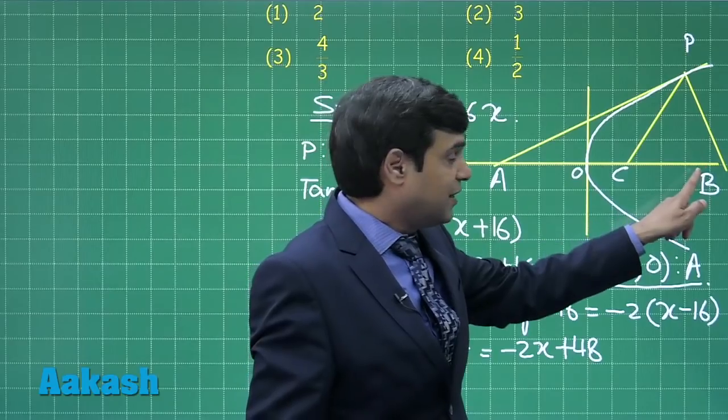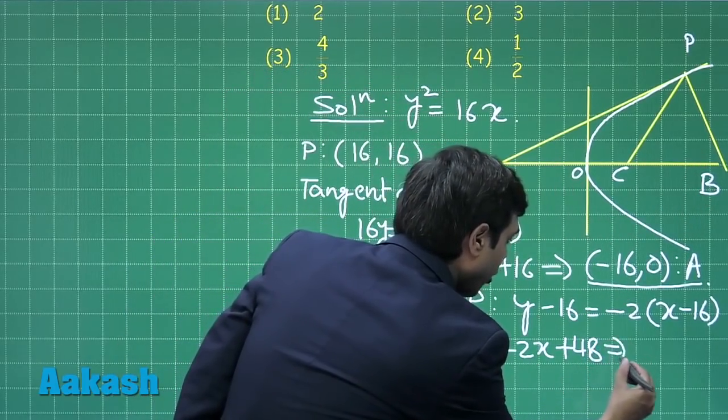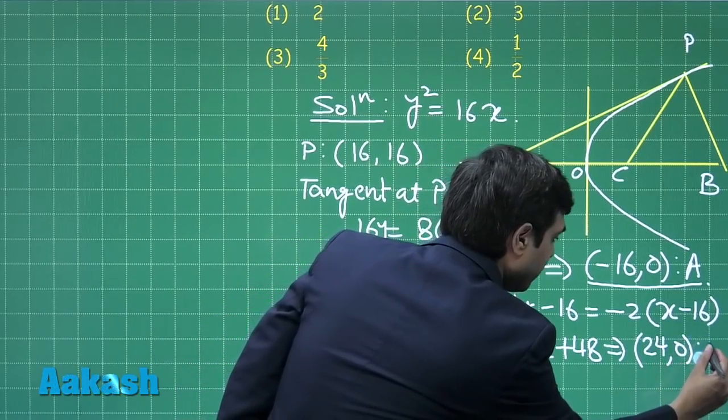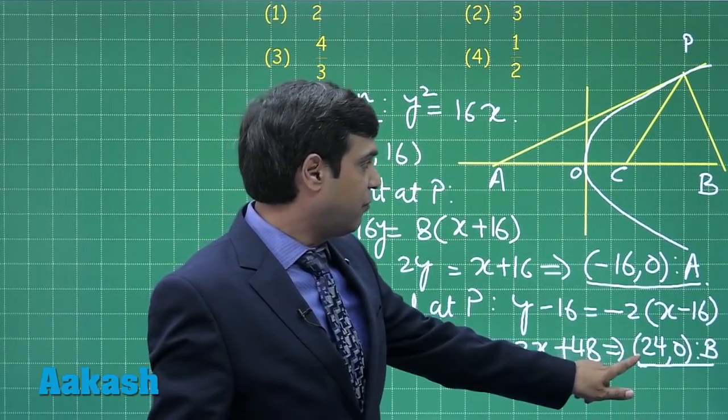With this normal we can see the point B by substituting y = 0. We obtain point B as (24, 0).